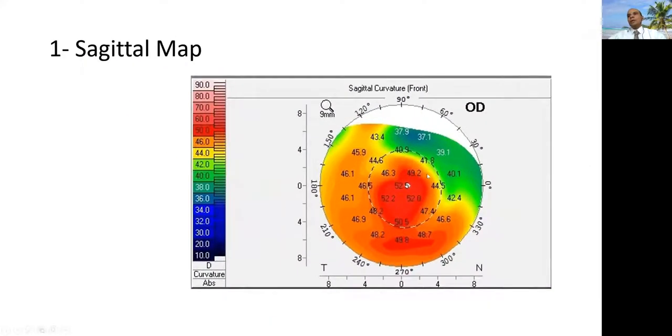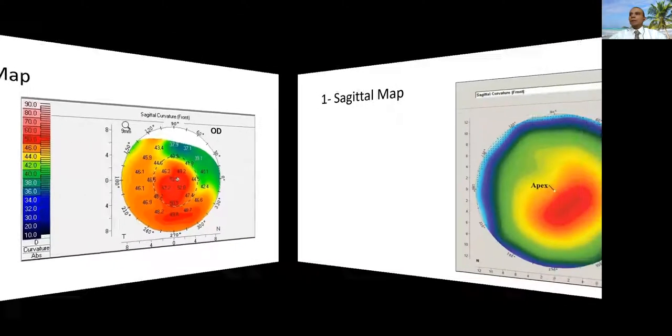Another protrusion here, with hot colors here, denoting about 50 to 60 diopters in the center. This is so suspicious of keratoconus, which is a major contraindication for refractive surgery. Another point to be mentioned is this blank white part, denoting that this part couldn't be captured. And actually, you shouldn't rely on that image. You should recapture this patient again.